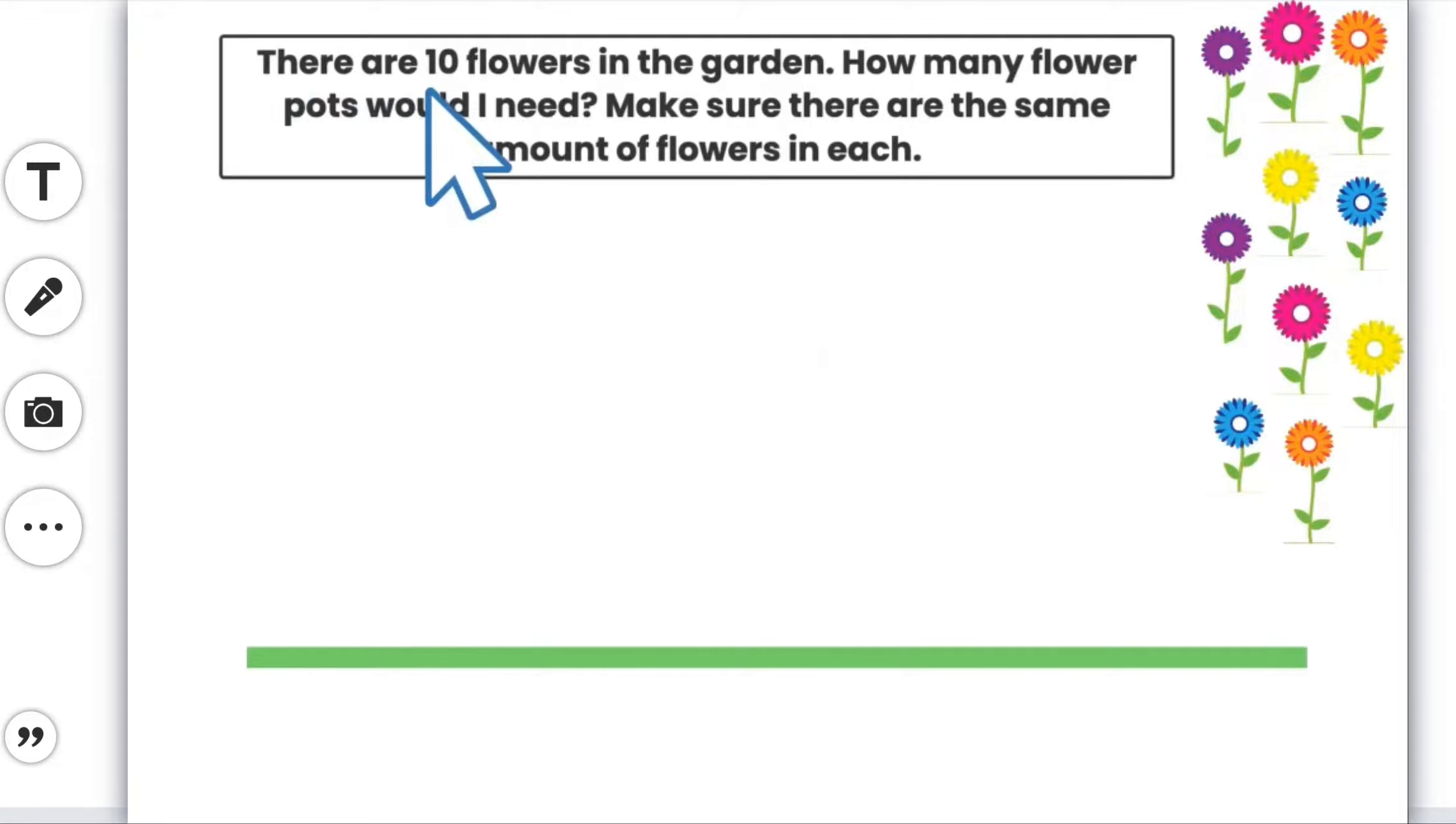So it says there are 10 flowers in the garden. How many flower pots would I need? Make sure there are the same amount of flowers in each. So over here I have my 10 flowers. I'm just going to count: 6, 7, 8, 9, 10. Okay so I have my 10 flowers.